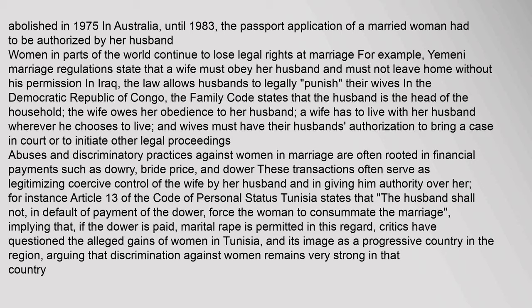A wife has to live with her husband wherever he chooses to live, and wives must have their husband's authorization to bring a case in court or to initiate other legal proceedings. Abuses and discriminatory practices against women in marriage are often rooted in financial payments such as dowry, bride price, and dower. These transactions often serve as legitimizing coercive control of the wife by her husband. For instance, Article 13 of the Code of Personal Status in Tunisia states that the husband shall not, in default of payment of the dower, force the woman to consummate the marriage — implying that if the dower is paid, marital rape is permitted. Critics have questioned the alleged gains of women in Tunisia and its image as a progressive country in the region, arguing that discrimination against women remains very strong.